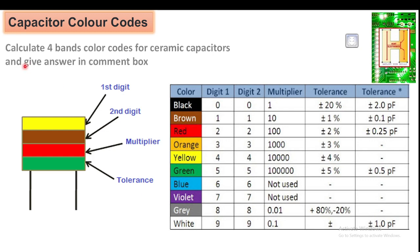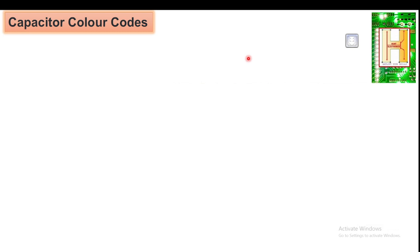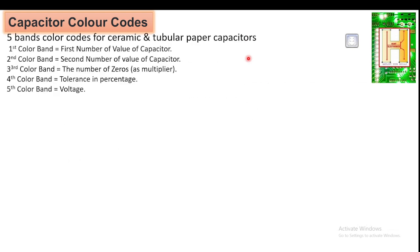There is one more exercise: calculate the four-band color code for a ceramic capacitor — the bands are yellow, brown, red, and green. Give your answer in the comment box. The first 10 correct answers, along with your email ID, will receive an exciting prize.